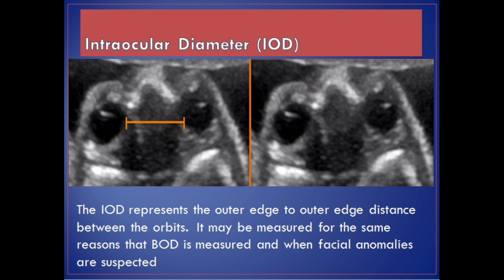Intraocular diameter, IOD, represents the outer edge to outer edge distance between the orbits. It may be measured for the same reasons that BOD is measured and when facial anomalies are suspected.